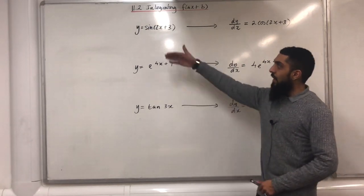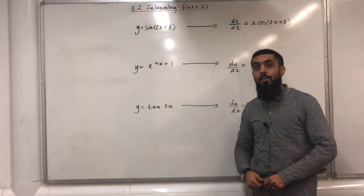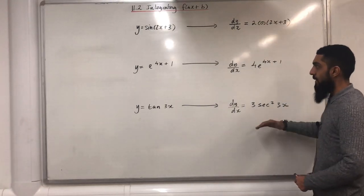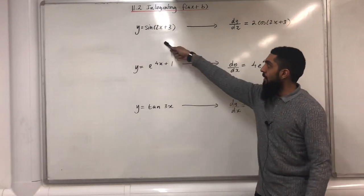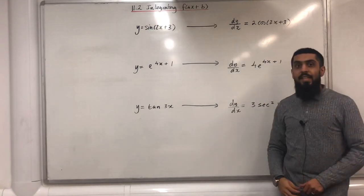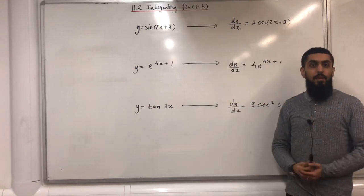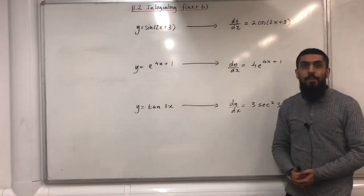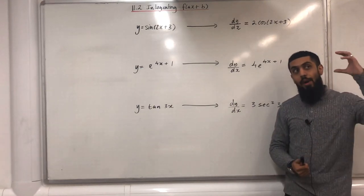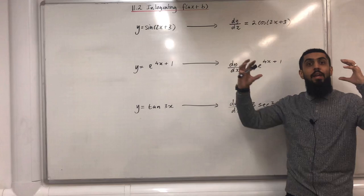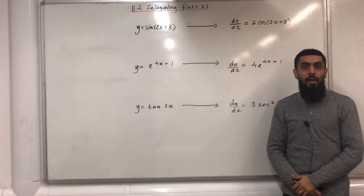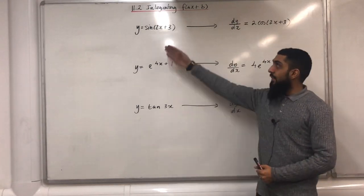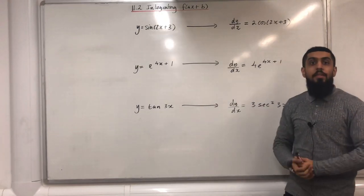Up on the board I've got three y equations and for each of these y equations I have written dy/dx. Let's have a look at the first line. When y is equal to sine(2x + 3), I know that dy/dx is equal to 2cos(2x + 3). I also know that going from dy/dx back to y is called integration. Therefore the integral of 2cos(2x + 3) will just be sine(2x + 3) + c.